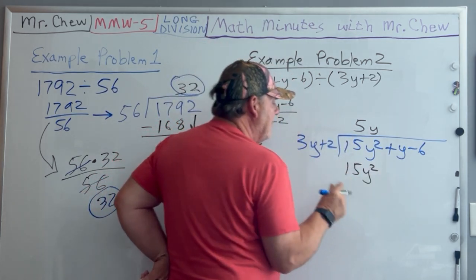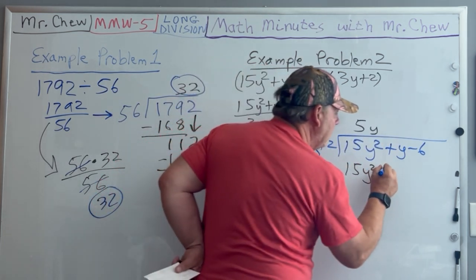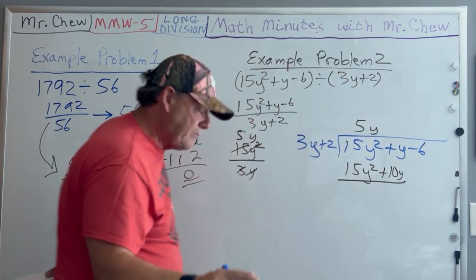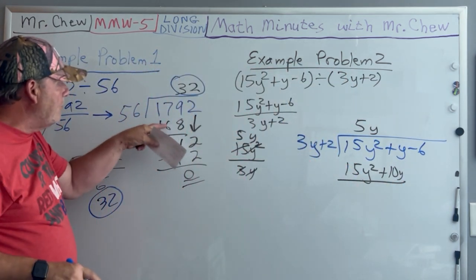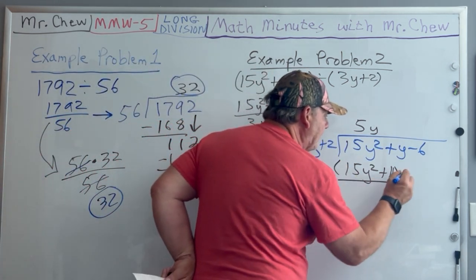Now I have to go to the next term: 5y times 2 is 10y. Now what did we do after we wrote this down? We subtracted it, so I'm going to subtract this whole thing.